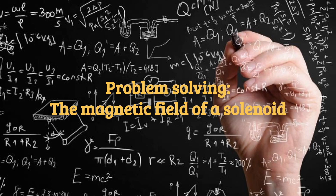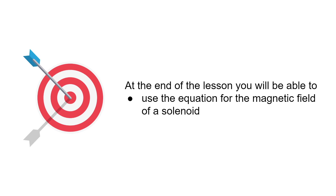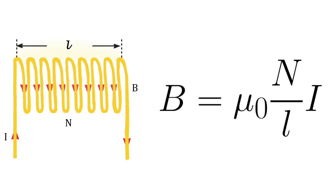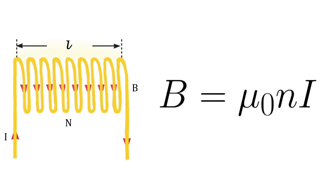Hello everybody, welcome to our lesson. Today we will solve problems on the topic: the magnetic field of a solenoid. The goal of the lesson is that at the end you will be able to use the equation for the magnetic field of a solenoid. We will use equations to find the magnitude of the magnetic field at the center of a solenoid. We have two equations: one using number of loops per length, and one where small n is the turns density.